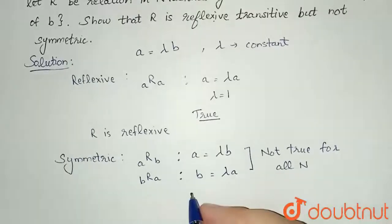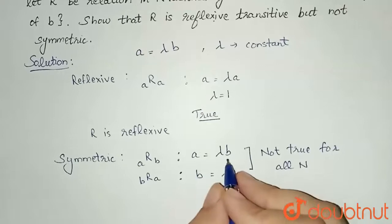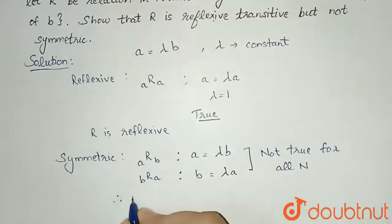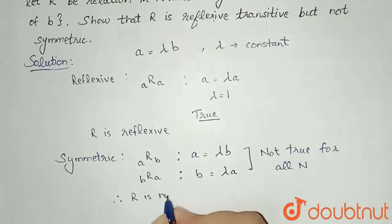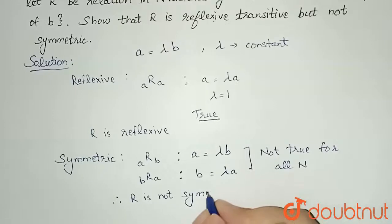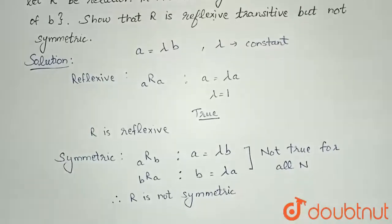For example, I can say that 6 is a multiple of 2, but 2 will not be a multiple of 6. So I can write that R is not symmetric since it is not satisfying for all N. Only for some it will be true, but not for all.